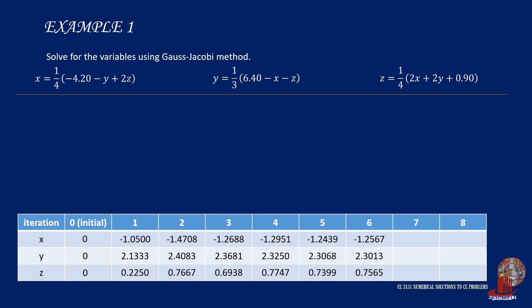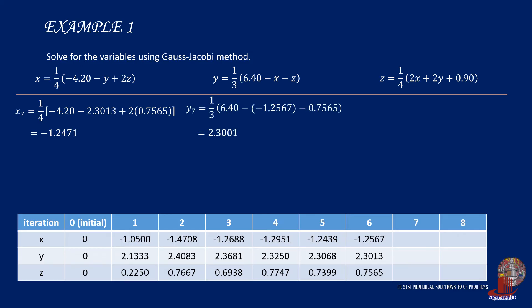We verify our answer by continuing to the seventh iteration. x₇ is one fourth of negative 4.2 minus 2.3013 plus 2 times 0.7565, giving negative 1.2471. y₇ is one third of 6.40 minus negative 1.2567 minus 0.7565, giving 2.3001. Then z₇ is one fourth of 2 times negative 1.2567 plus 2 times 2.3013 plus 0.9, giving 0.7473.